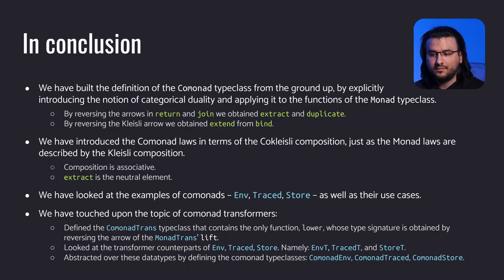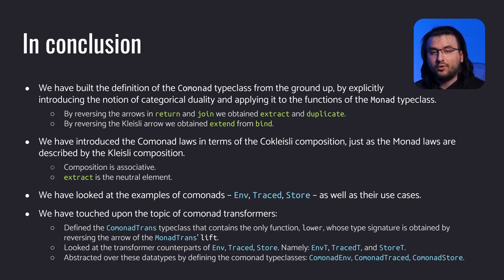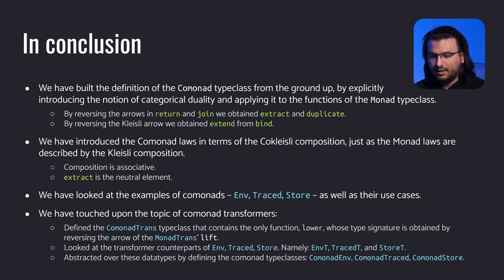In conclusion, we have built the definition of the comonad type class kind of from the ground up by explicitly introducing the notion of categorical duality and applying it to the functions of the monad type class. First, by reversing the arrows in return and join, we obtained extract and duplicate. Second, by reversing the Kleisle arrow, we obtained extend from bind. Then we introduced the comonad laws in terms of the co-Kleisle composition — just as the monad laws are described by the Kleisle composition — requiring the composition to be associative and extract to be its neutral element. We have looked at examples of comonads — env, traced, and store — as well as their use cases. And ultimately, we touched upon the topic of comonad transformers.